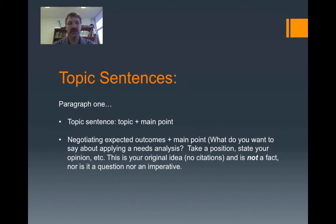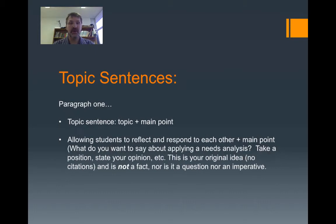The same applies to your second paragraph: negotiating expected outcomes is the topic — say something about it, state your opinion, take a position where someone else might have a different view. You're stating one opinion and will provide evidence to support it in the supporting sentences. For the third paragraph, the topic is allowing students to reflect and respond to each other. Say something about this, take a position — this is your original idea, no citations, no facts, no questions, no imperatives. Just state your idea, and then later support it with evidence.